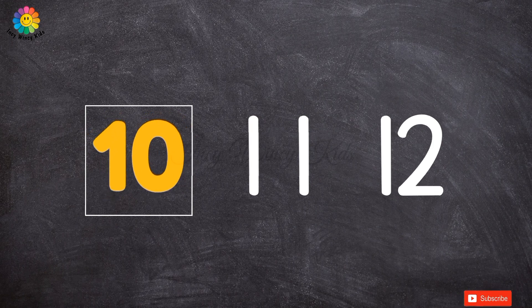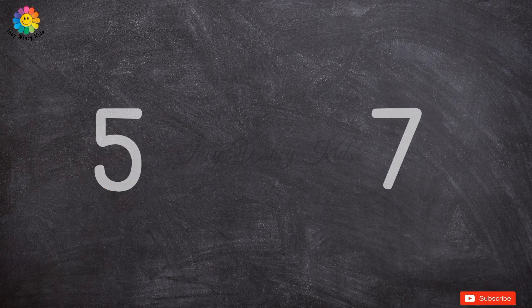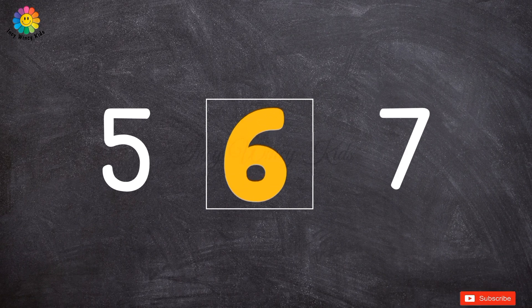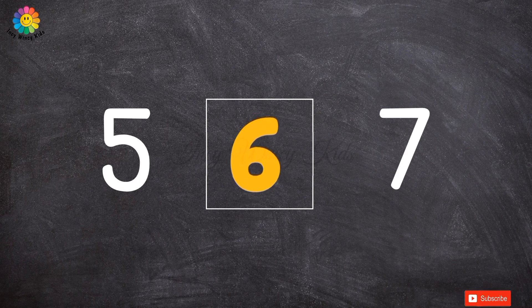The answer is 10. What comes between 5 and 7? The answer is 6. 5, 6, 7.